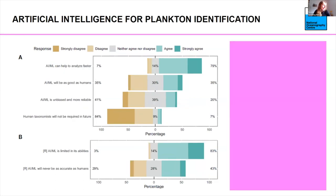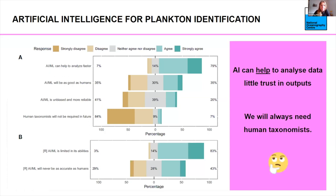Now, what about using artificial intelligence for plankton identification? There was a very strong consensus that AI and machine learning can help to analyse images faster. But when we asked whether AI and machine learning will be as good as humans, there wasn't a really clear consensus. Quite surprisingly, there was actually a strong disagreement with the statement that AI and machine learning is unbiased and more reliable — so the community doesn't quite trust it yet. And there was a very strong consensus that taxonomists will be required in the future. AI is perceived to be limited in its abilities, and it will never be as accurate as humans.